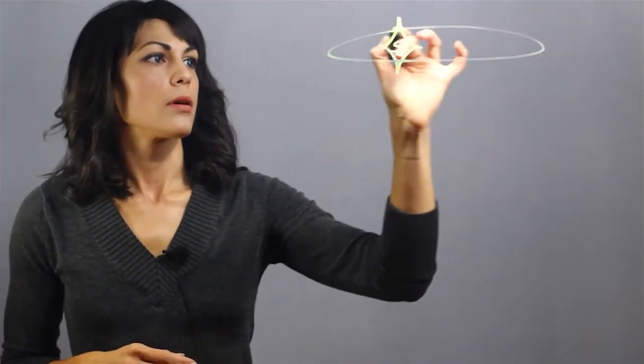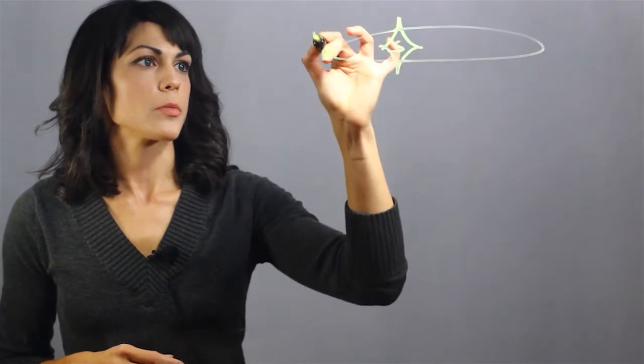First, let's talk about the orbit of Mercury and the temperatures on Mercury. Let's say we have the Sun, we have its orbit, and here is Mercury.